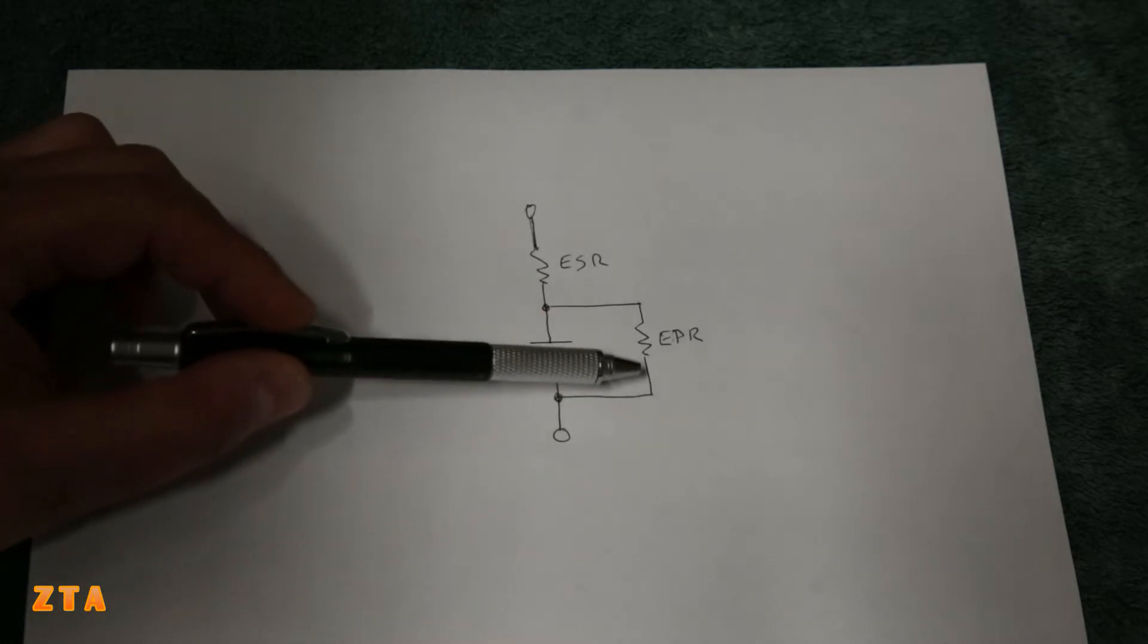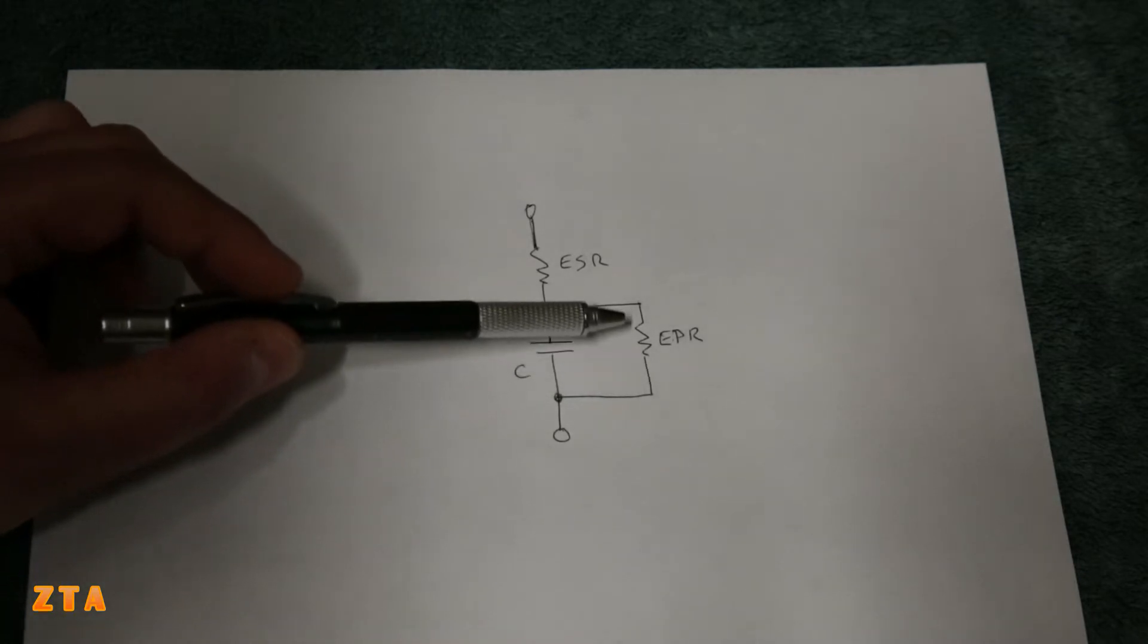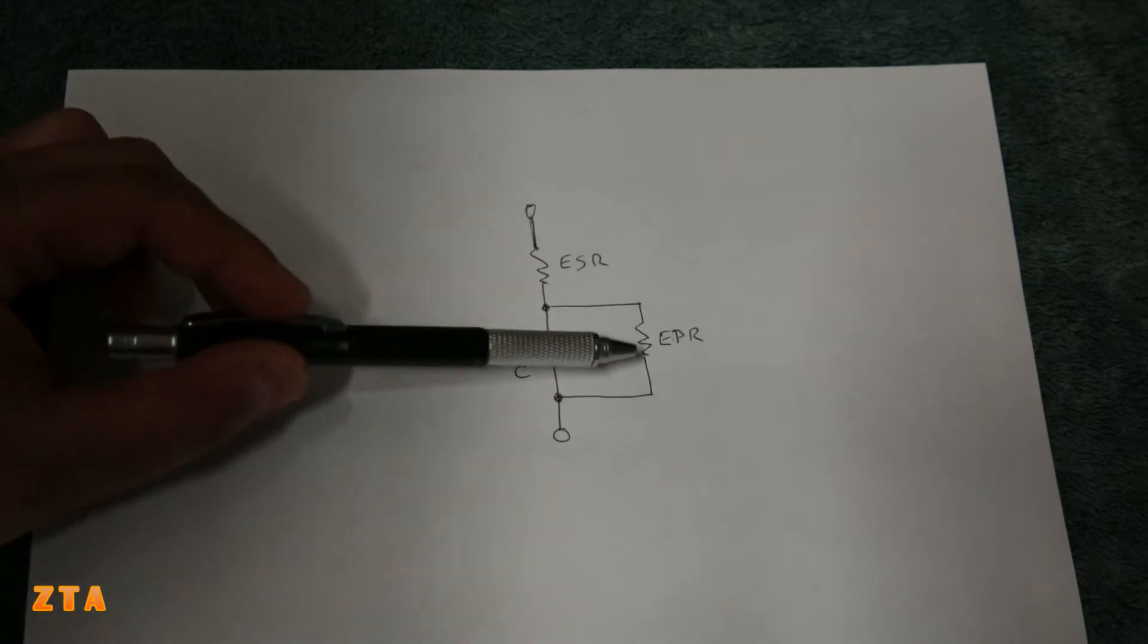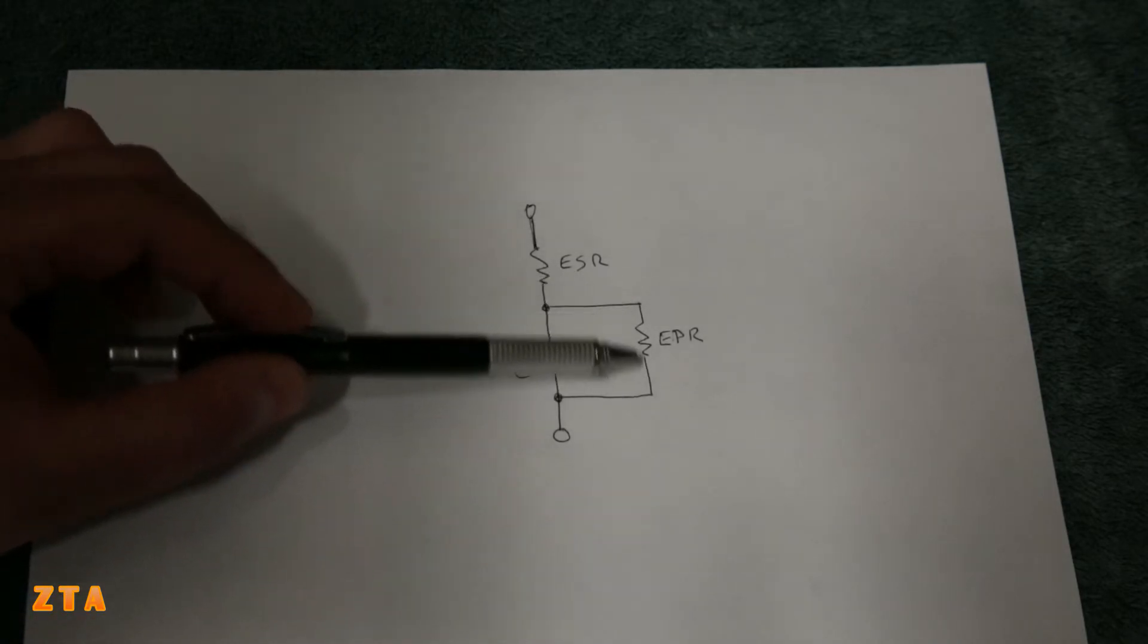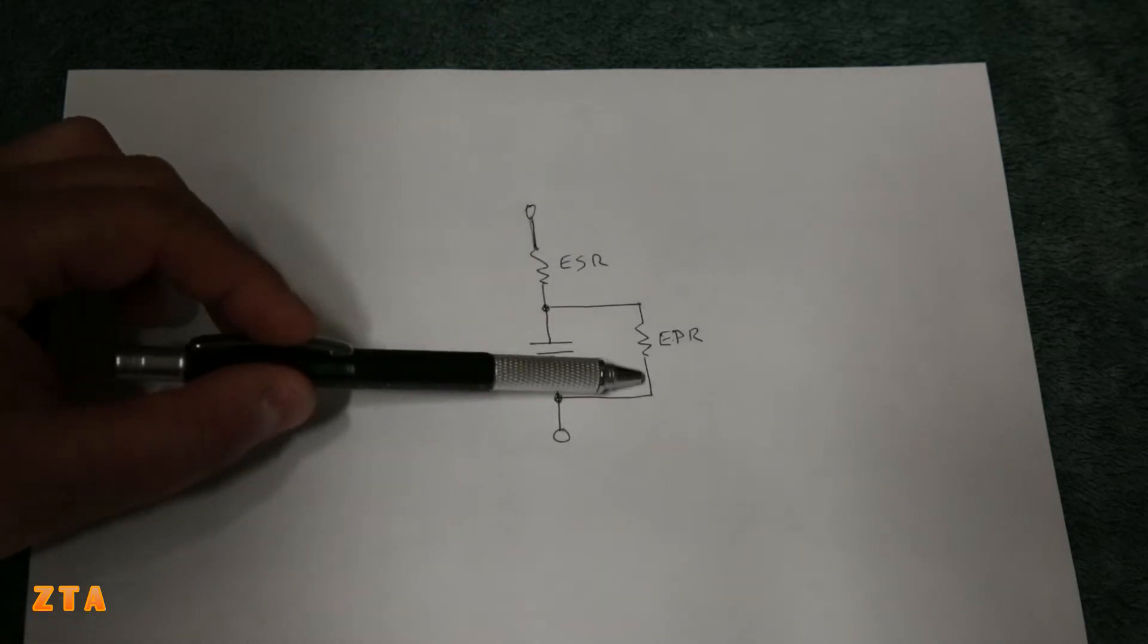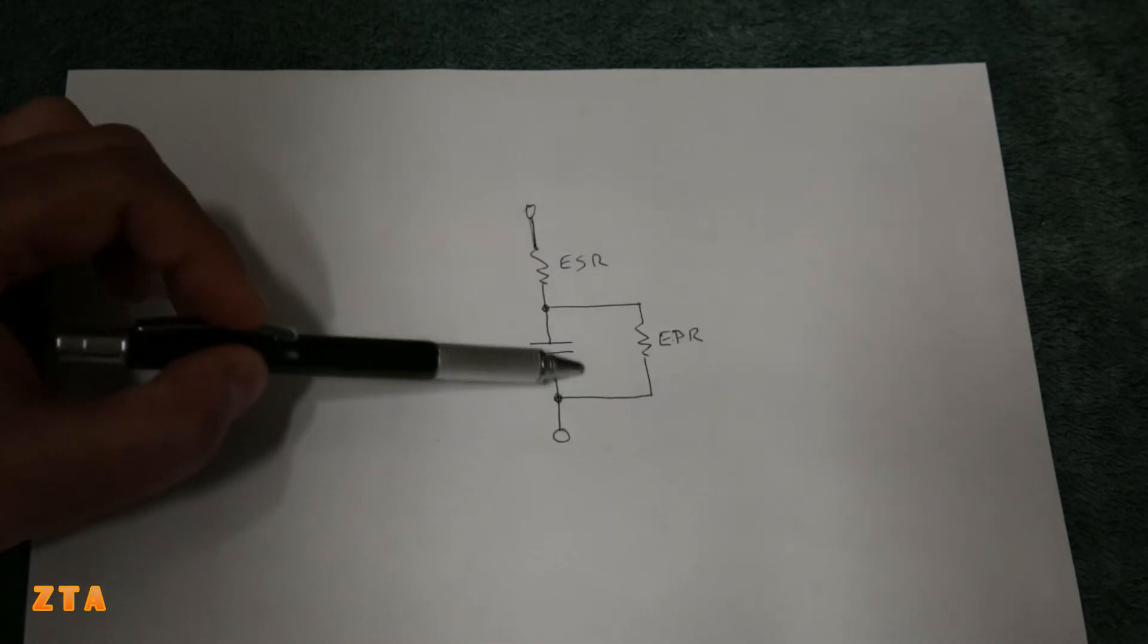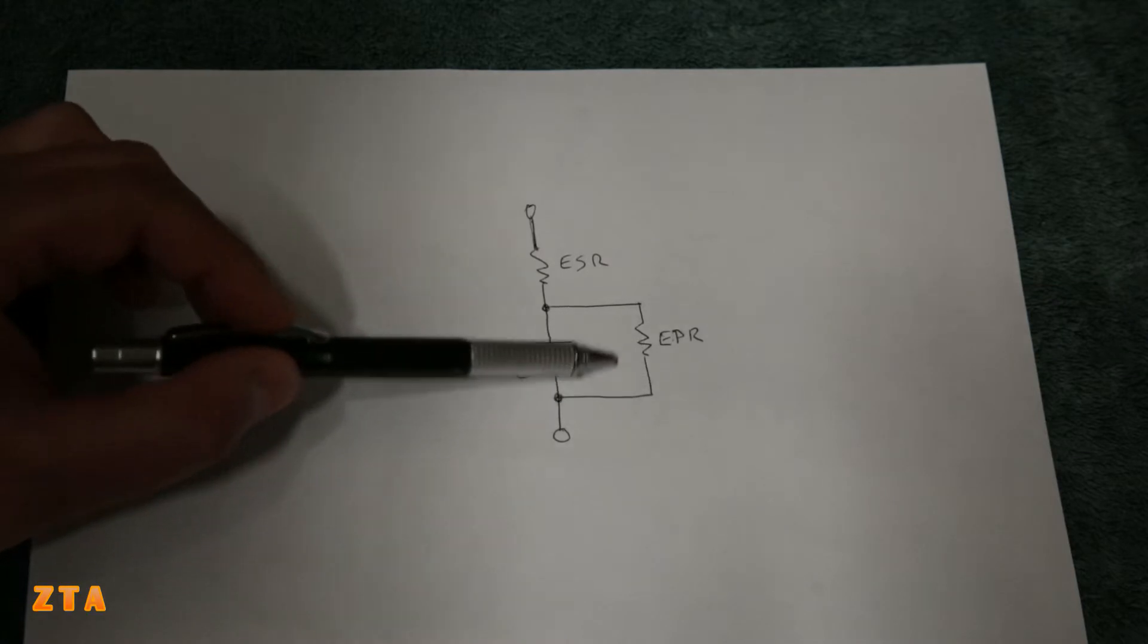When I say lower, we're talking from hundreds of mega ohms to maybe tens of mega ohms. Some capacitors will go down to hundreds of kilo ohms, or even tens of kilo ohms. Then they're really drawing a lot of current, especially at high voltages through that resistance.